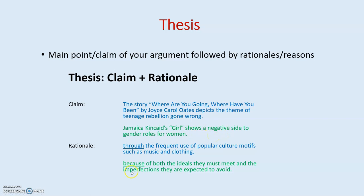Here's a sample claim: 'The story Where Are You Going, Where Have You Been by Joyce Carol Oates depicts the theme of teenage rebellion gone wrong.' This is one writer's interpretation of the theme. Another: 'Jamaica Kincaid's Girl shows a negative side to gender roles for women.' These are positions the writer will be arguing. For the rationale: the Oates story depicts the theme through the frequent use of pop culture motifs such as music and clothing — two rationales. And for Kincaid's Girl, it shows a negative side to gender roles because of both the ideals women must meet and the imperfections they are expected to avoid. Again, two rationales. This is just a simple thesis example.